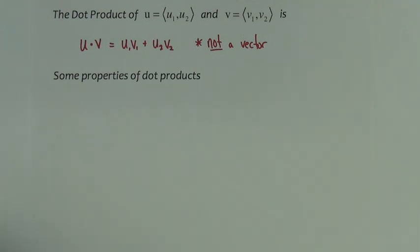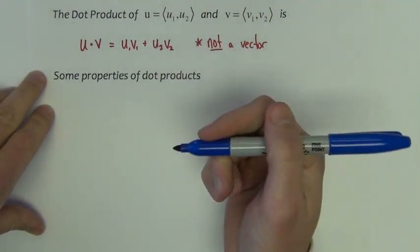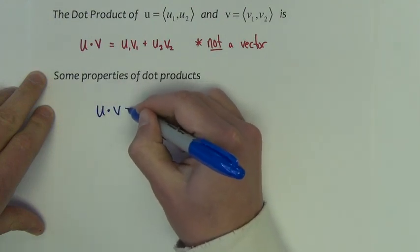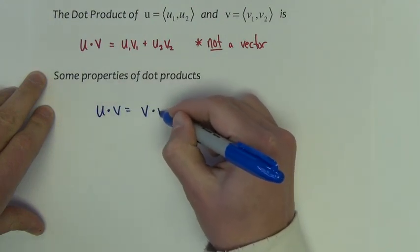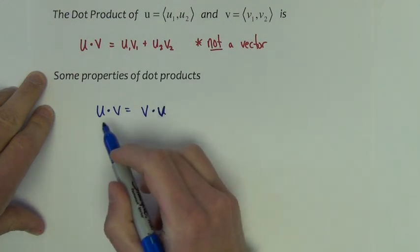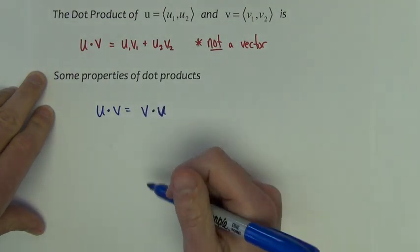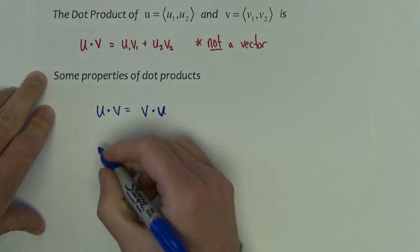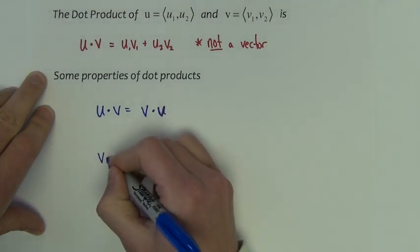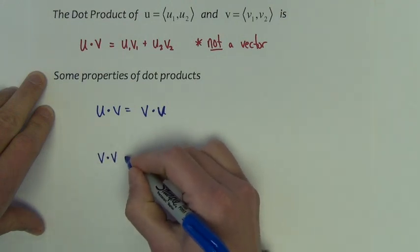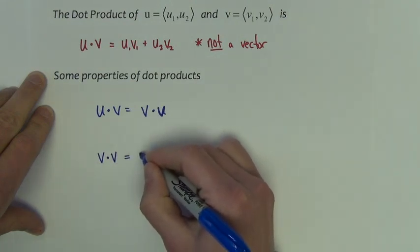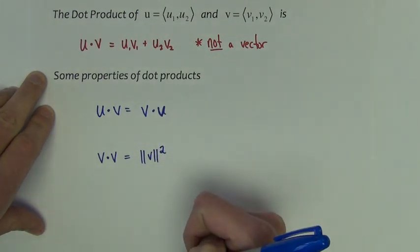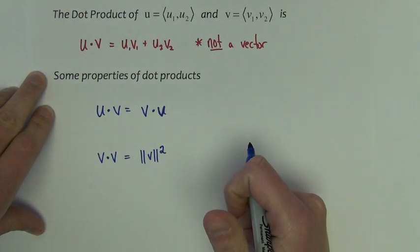Now, some properties of dot products. u·v is the same as v·u, so the order in which you find the dot product doesn't matter. Also, any vector dot product with itself is equal to the magnitude of that vector squared, v·v = ||v||². Just a couple of special properties dealing with dot products.